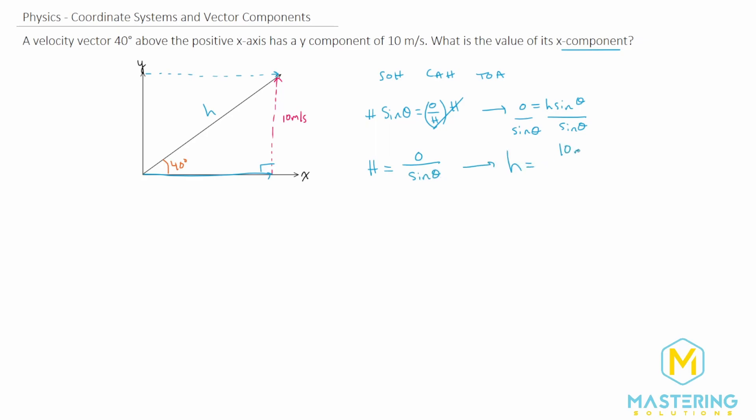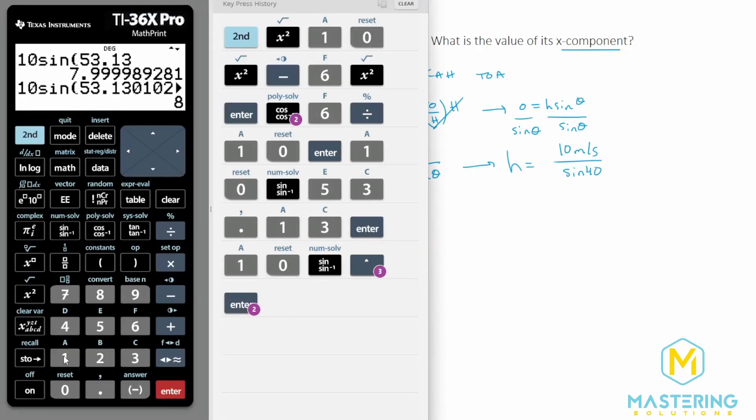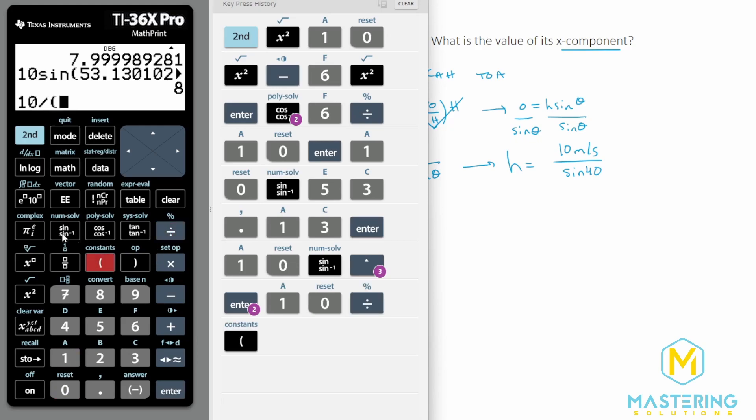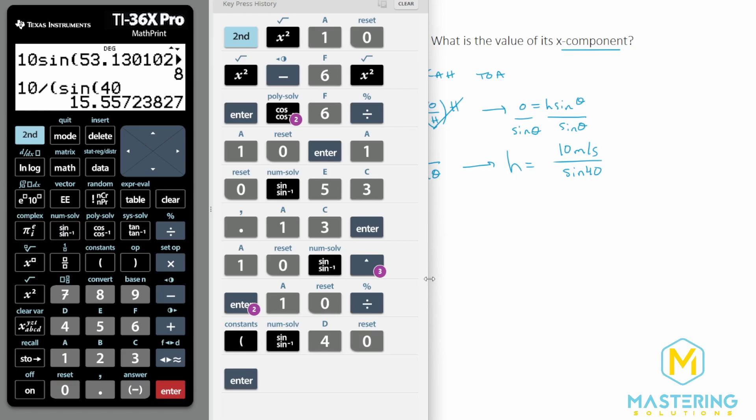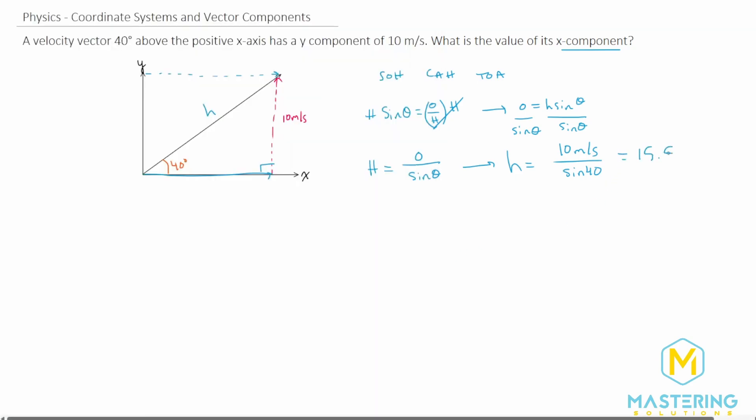So h is equal to 10 meters per second divided by sine of 40. So 10 divided by sine 40 gives us 15.56 meters per second. So this is the value for the hypotenuse vector right here. That's the magnitude.